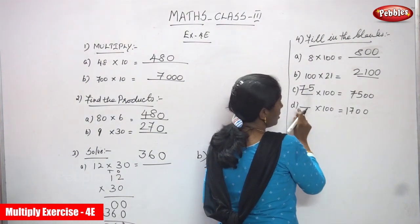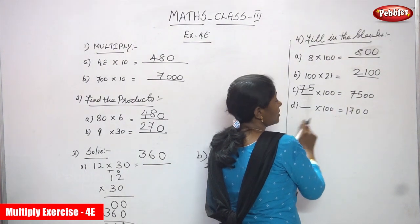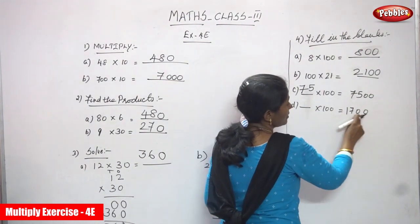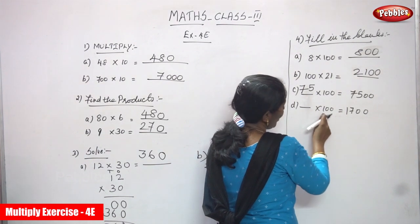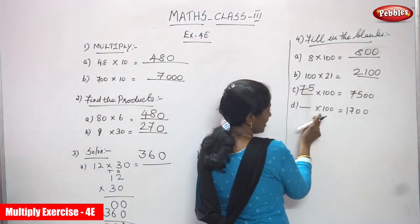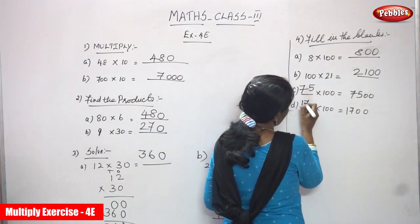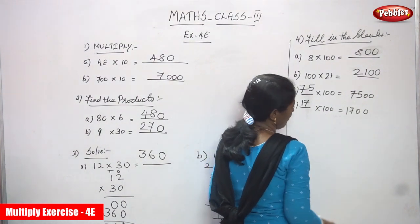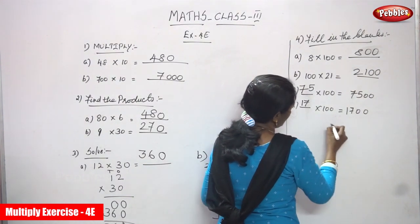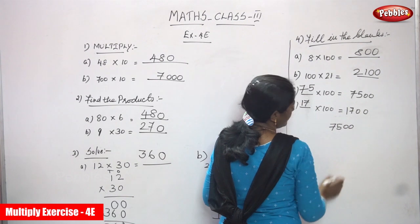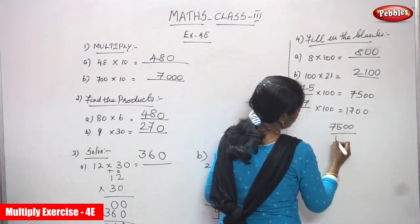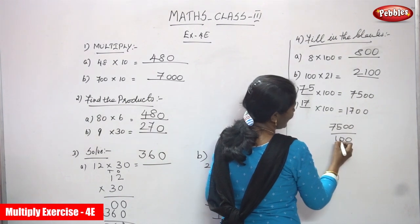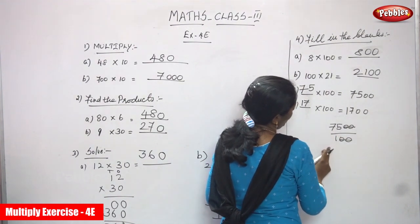Next: 100 into blank equals 1700. Double zeros at the end — so the answer is 1700. You have to find the blank number. Using division: 1700 divided by 100 — cancel the two zeros — gives 17 divided by 1, which equals 17. So the blank is 17.